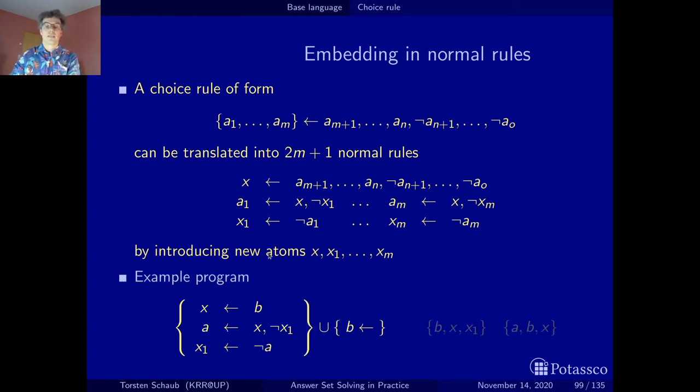This is the original body, B. If the body is true, we get our x. So this x abbreviates the original body. If we have the body, then we can derive a in case we did not derive x1. But if the other situation is the case, if a is not true, then we derive x1, which blocks this rule. Here we get both possibilities - either we get a, or we get x1.